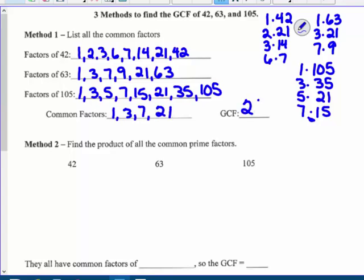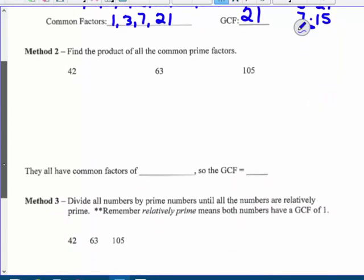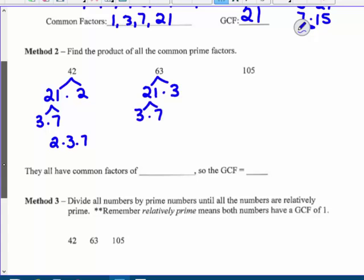So find the product of the common prime factors using prime factorization. So 21 times 2, that's 3 times 7. So 2 times 3 times 7 is 42. 21 times 3, 3 times 7, so 3 squared times 7 is 63. And then 21, I know it's 21, so I'm pulling that out first. 3 times 7, so this is 3 times 5 times 7.